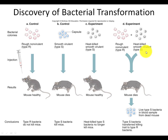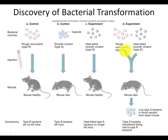Griffith grew R strain and S strain. Mice treated with R strain (non-virulent) remained healthy. Mice injected with smooth strain died. Heat-killed S strain no longer killed mice. But when he mixed heat-killed smooth strain with the rough non-virulent strain and gave it to mice, the mouse died — which was unexpected. He concluded there must have been a transforming factor in the S strain that transferred to the R strain and made it virulent.